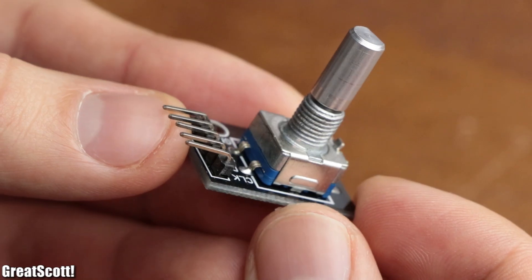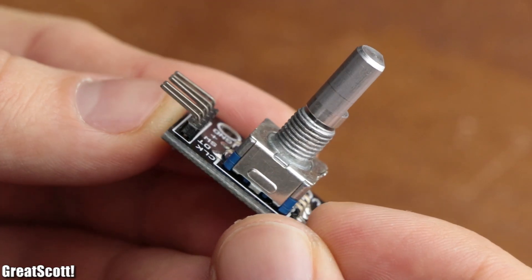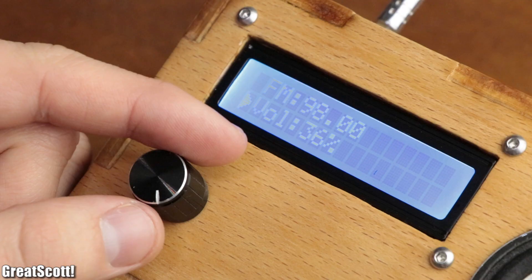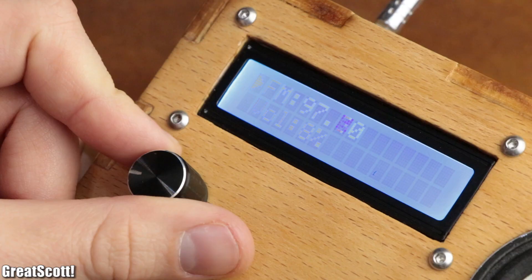Rotary encoders are very useful electrical components whose rotational direction can easily be determined, which makes them perfect to select and change variables.